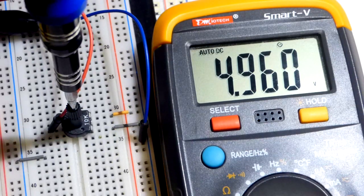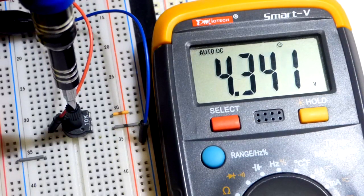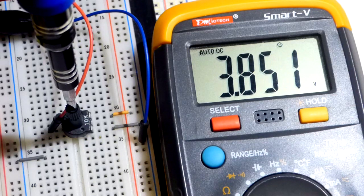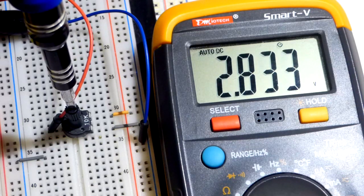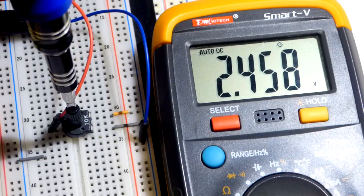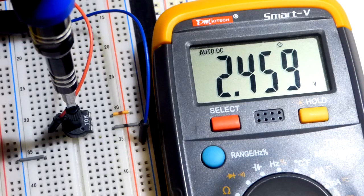And as I turn the dial, since there's no load, the load would throw this off. But since there's no load, we can see that about halfway, we have about half of the power supply voltage.